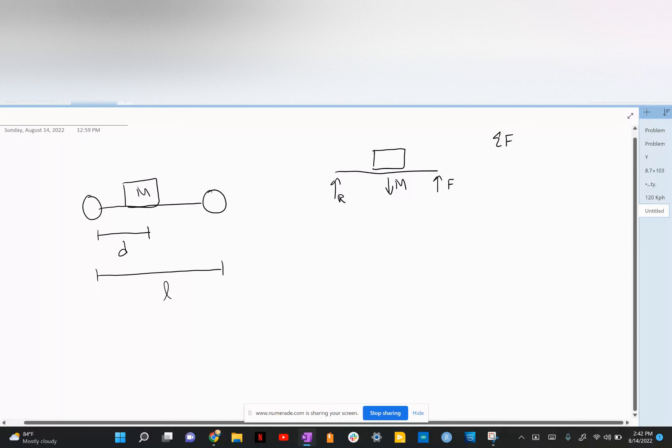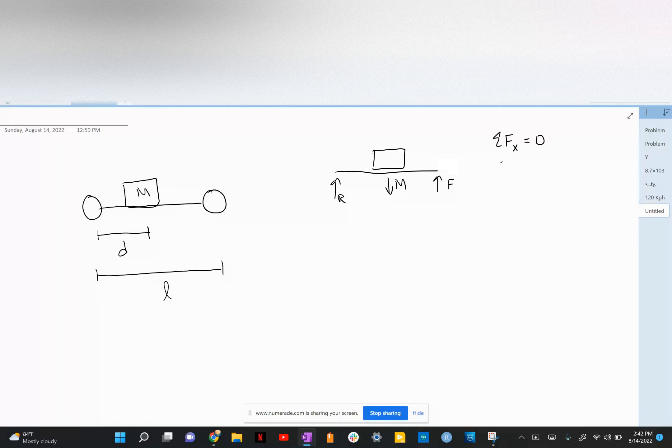Sum of the forces in the x-axis is equal to zero, and sum of the forces in the y-axis is equal to zero, and sum of the moments about the rear wheel about R is equal to zero.